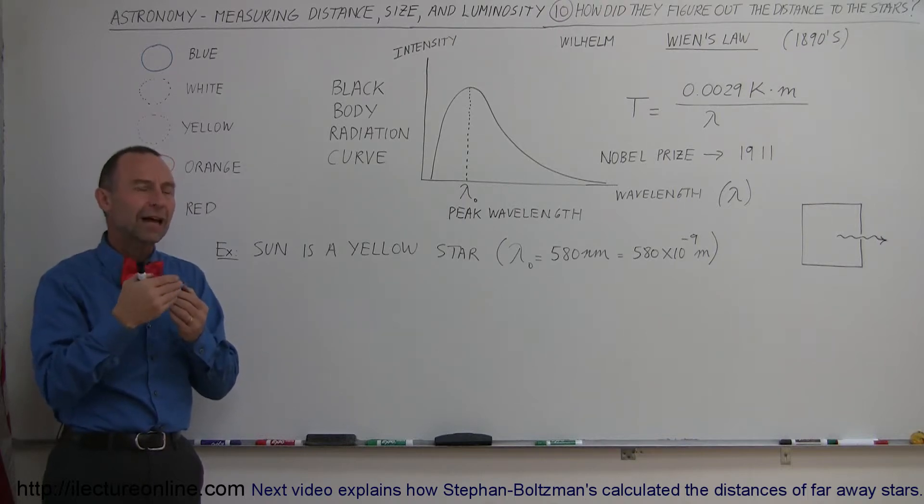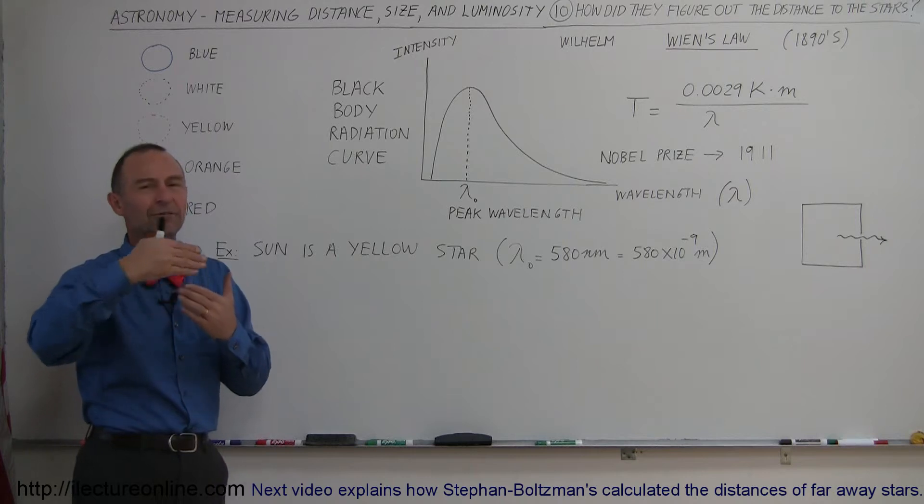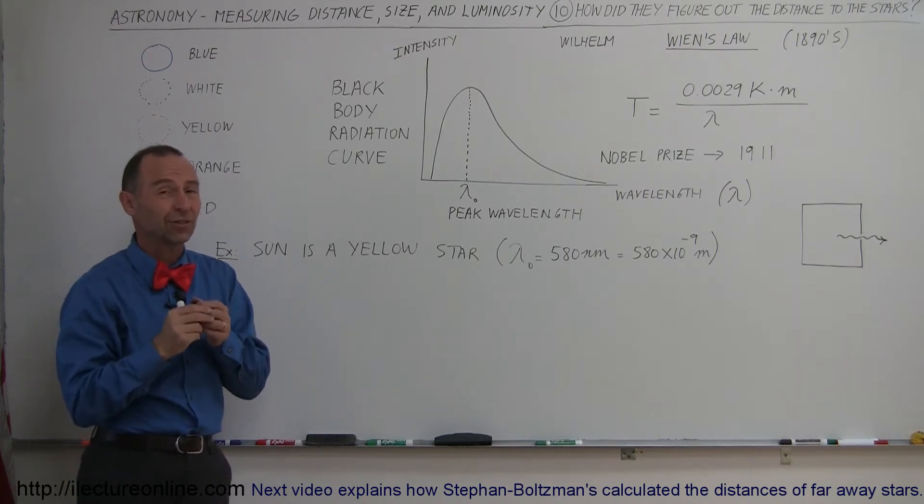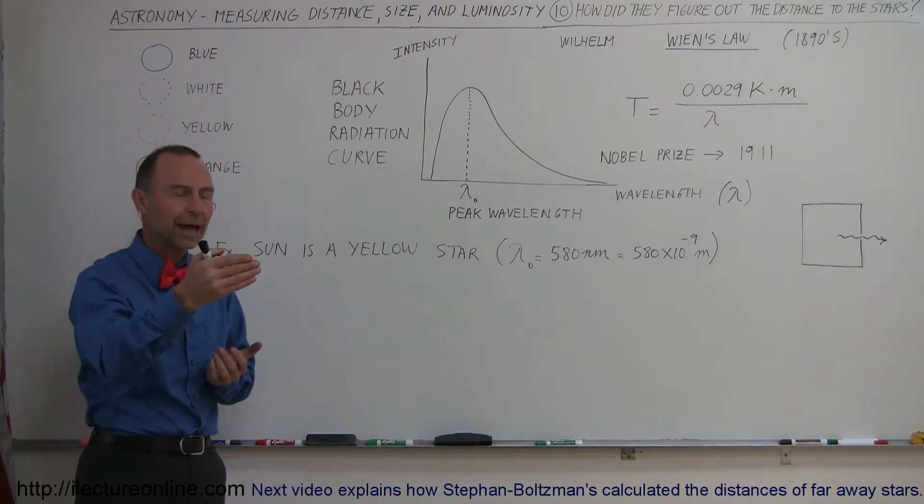But that method was only really valid for the hundred nearest stars, because any stars beyond that, any stars beyond 15 or 16 light years, had such a small angle of parallax that we could just simply not measure that angle. So how did we figure out the distance to the stars beyond that?